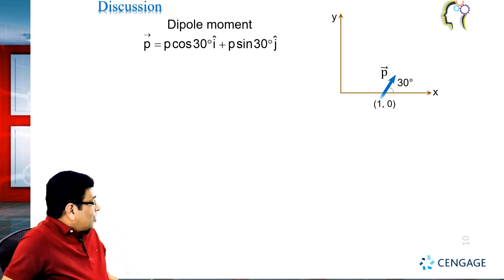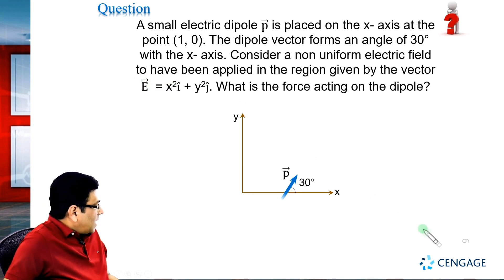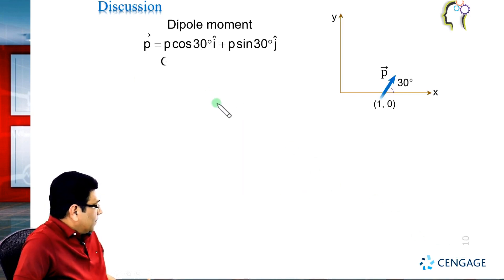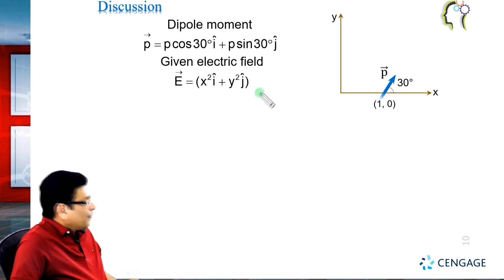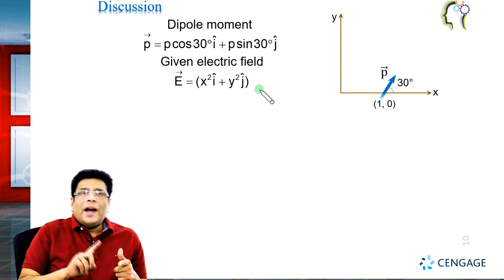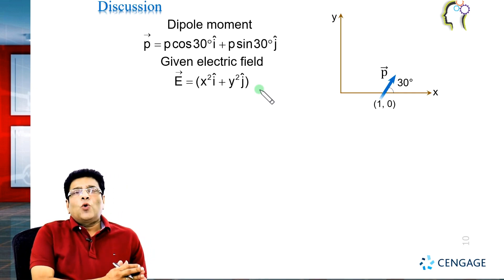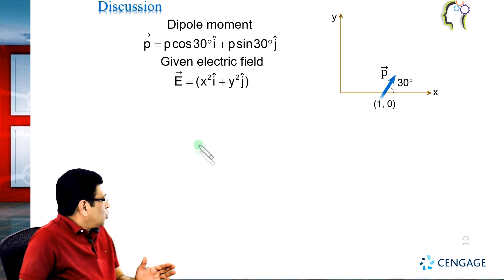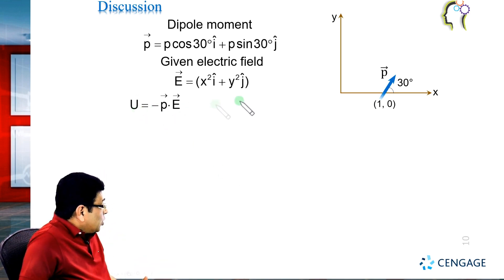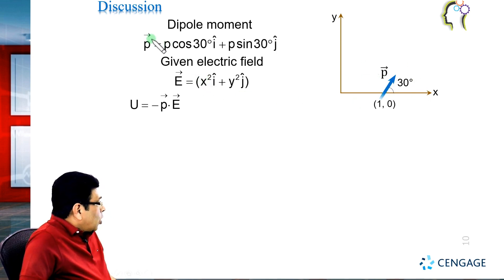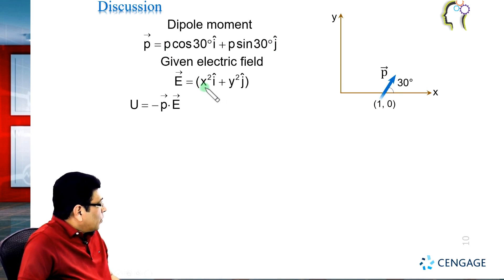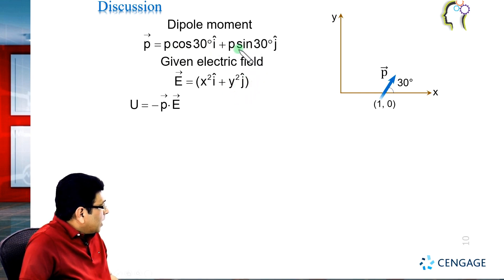We are given an external electric field which is non-uniform. We can write the potential energy of the dipole associated with the electric field, which is equal to minus p dot E. The dot product of p vector and E vector gives: U = x² × p cos30° + y² × p sin30°.